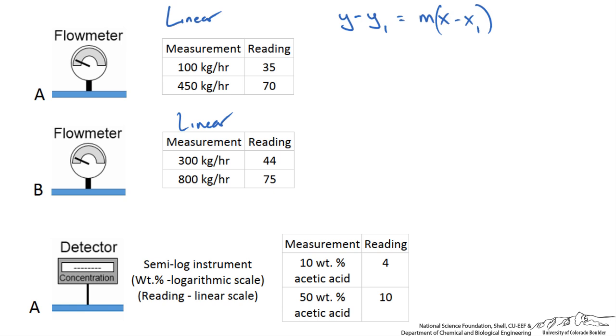Using this equation with the measurements we have, our mass flow rate for stream A minus one of the points, say 100, equals the slope times our reading on A minus the point value that we used before with the 100 kg per hour.